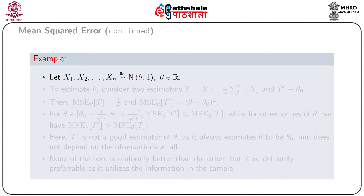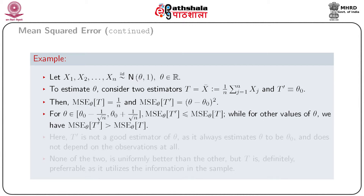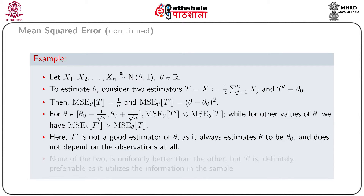Let x₁, x₂, …, xₙ be iid Normal(θ, 1) random variables where θ is unknown. Consider two estimators: T = X̄ and T' = θ₀, where θ₀ is any specific value of θ. Then MSE_θ(T) = 1/n, and MSE_θ(T') = (θ₀ − θ)². For values of θ in the interval [θ₀ − 1/√n, θ₀ + 1/√n], the MSE of T' is less than that of T. But for other values of θ, MSE of T' is greater than that of T. Here T' is a freak estimator of θ, since it always estimates θ to be θ₀.